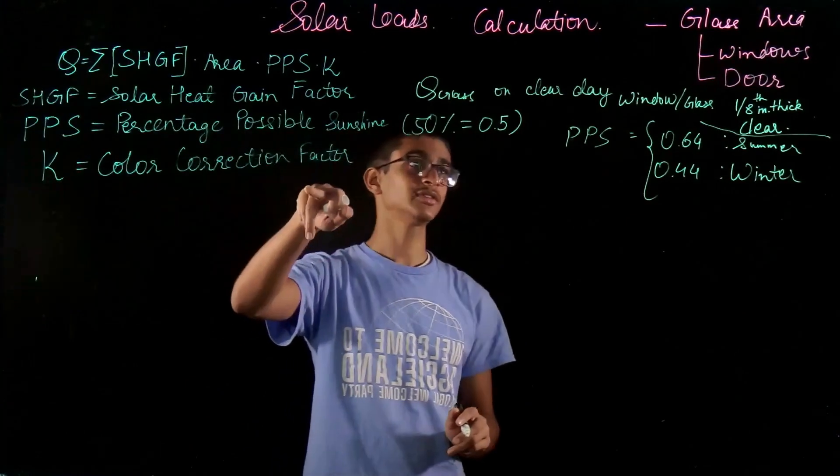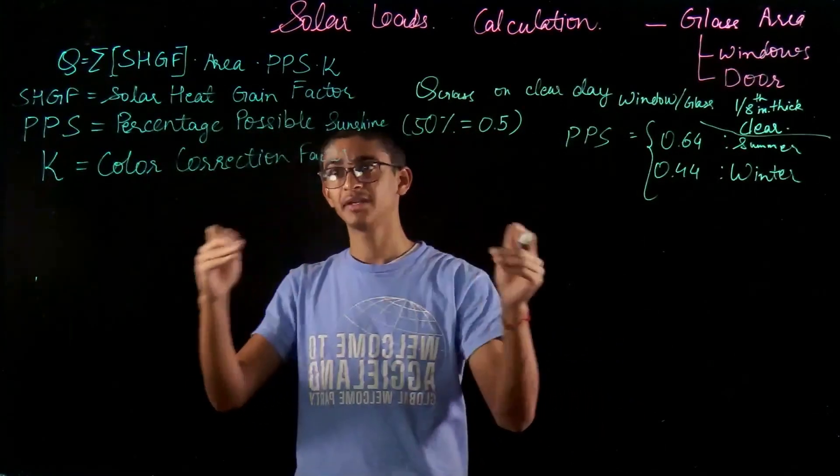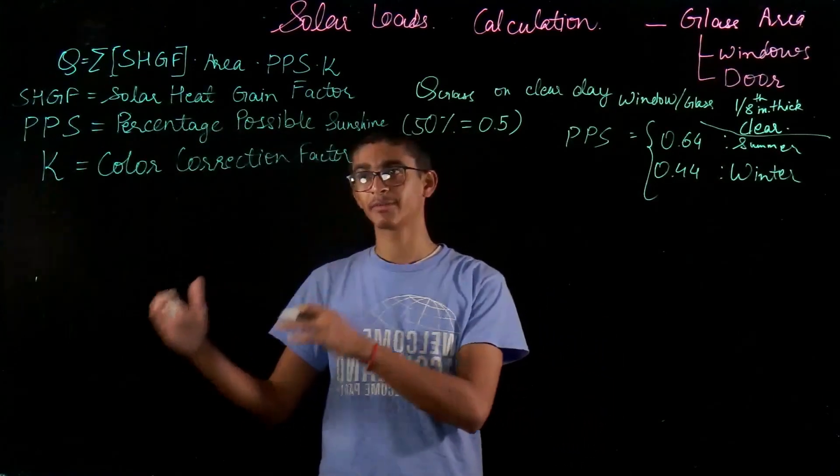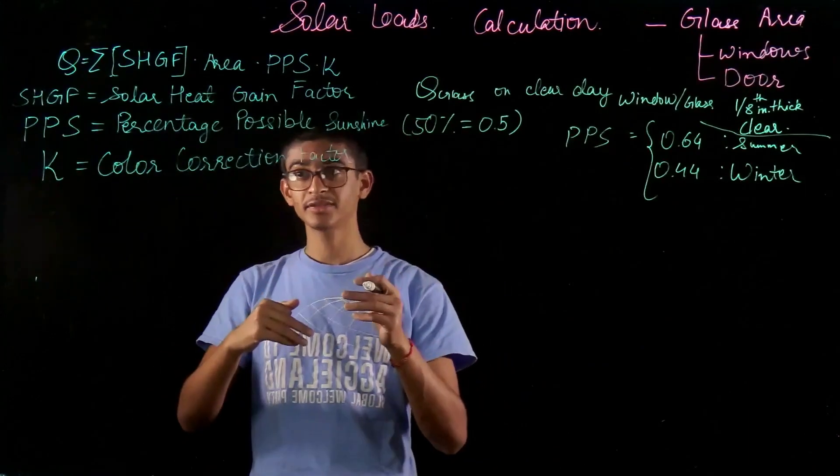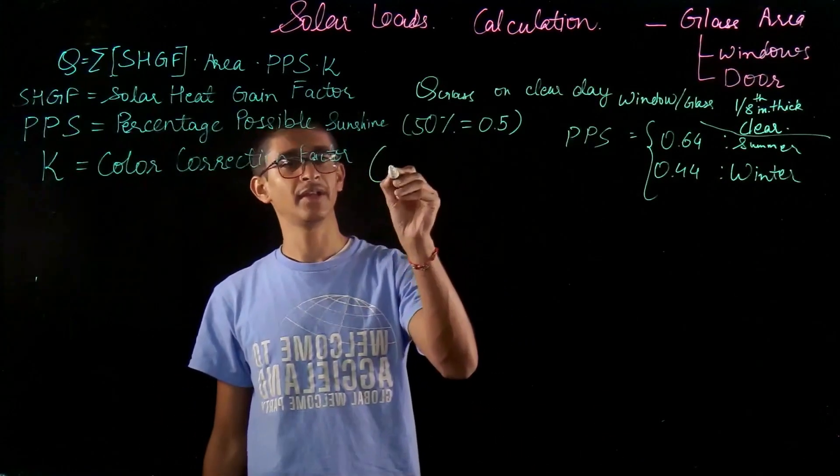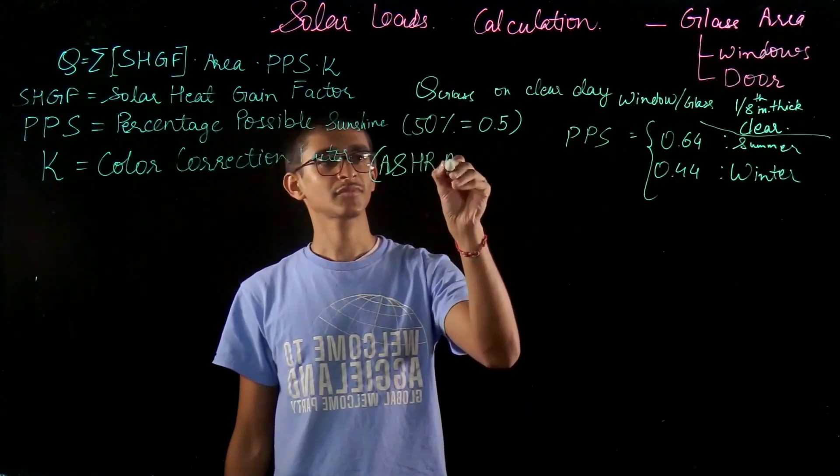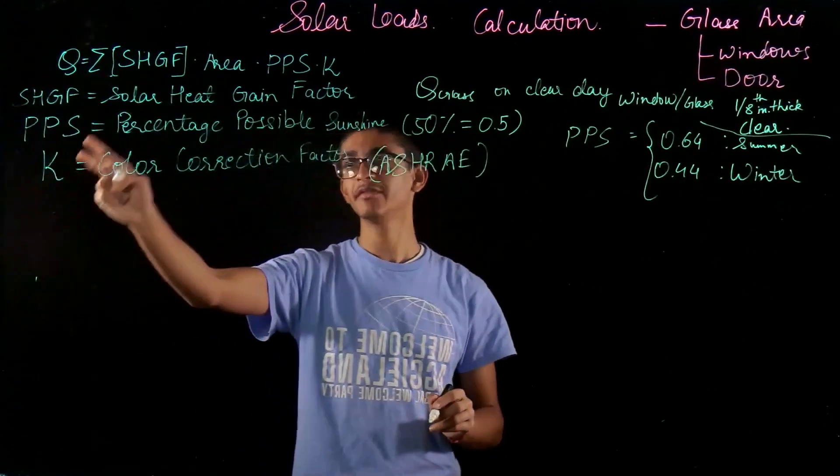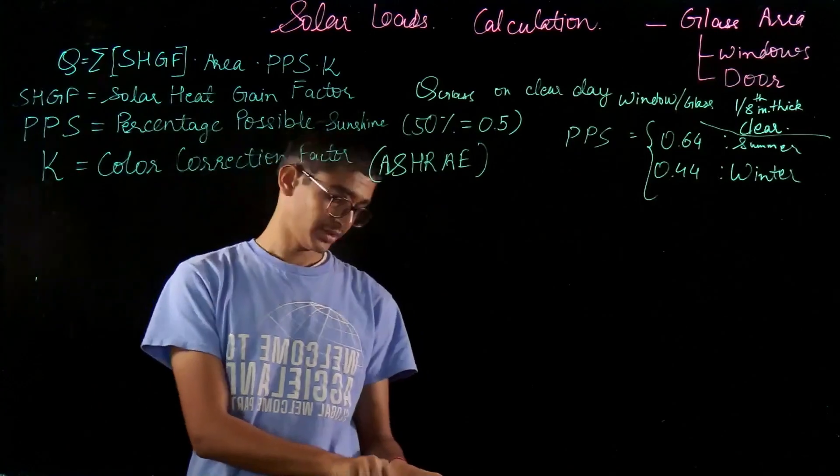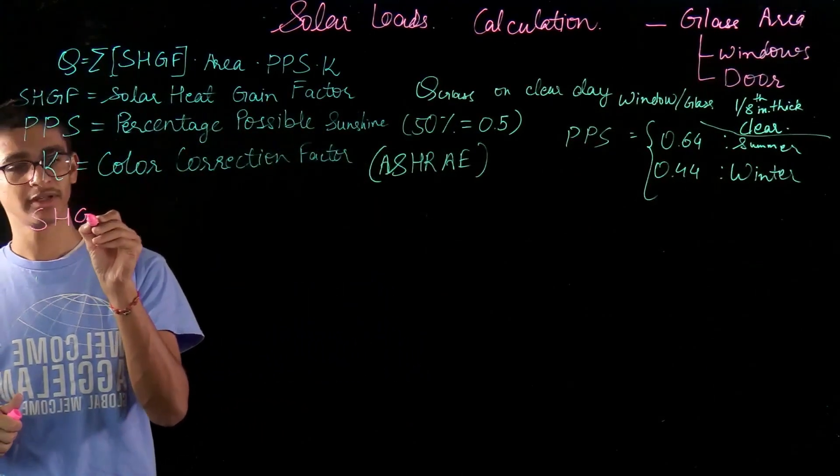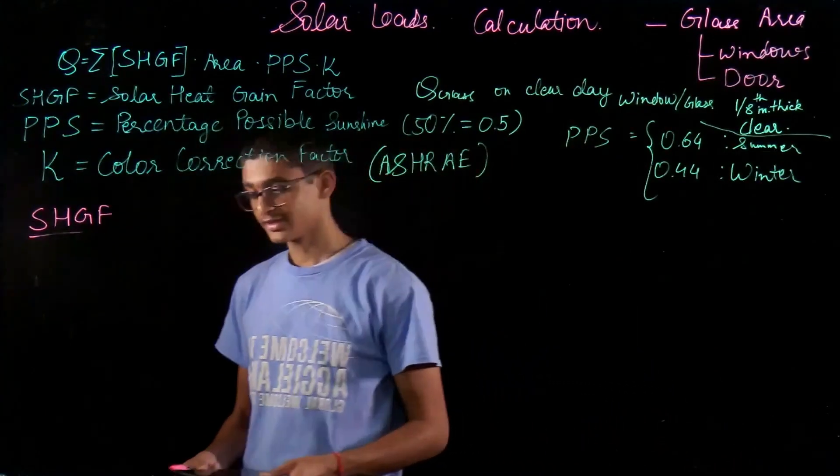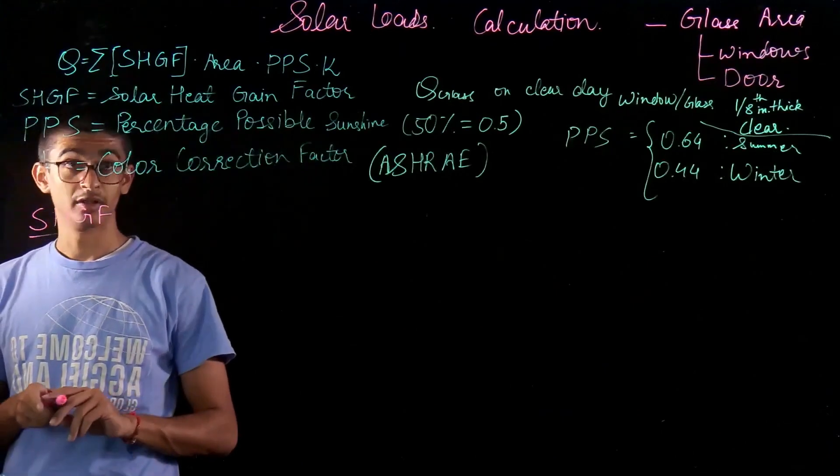K is the color correction factor that comes into account because if we have a black object inside our room, it is going to absorb more heat. If it is a white object, white colored on the surface, it is going to absorb less heat. That will take into account the different colors of our objects inside the room, the furniture, sofa set, everything. This K value will take into account those things. These values are also available in ASHRAE charts. For SHGF and K, we need to look at the ASHRAE charts.